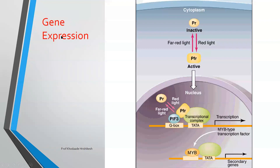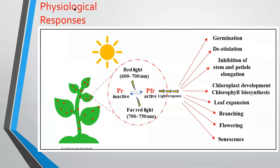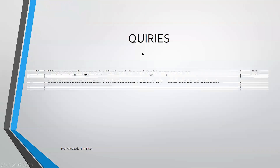All these responses are due to the PFR form — don't forget this. The physiological responses include germination of seed, de-etiolation, flowering, branching, leaf expansion, chloroplast development, as well as senescence. All these responses come under the mode of action of phytochrome, happening due to PR form absorbing red light and converting into PFR form. Please let me know what difficulties you are facing so I can make videos accordingly. Thank you.